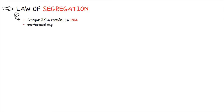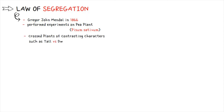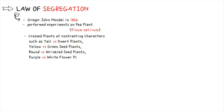This law was given by Gregor John Mendel in 1866. He performed several experiments on pea plant Pisum sativum, in which he crossed plants of contrasting characters such as tall versus dwarf, yellow versus green seed, round versus wrinkled, and purple versus white flower. He studied the inheritance of seven different characters in pea plant.